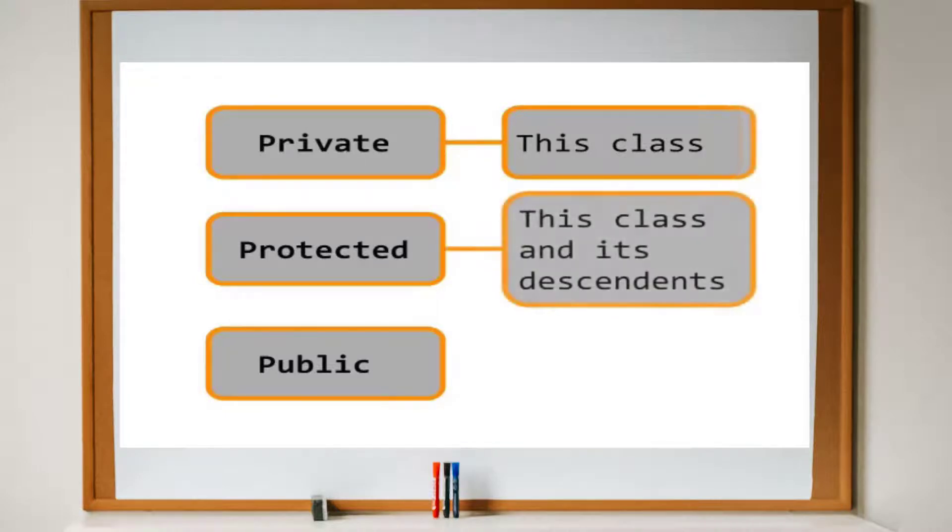Protected means that the class members are only visible to the class and its derived classes. Protected is used in inheritance chains. We will cover inheritance in the next tutorial in the object-oriented programming series.